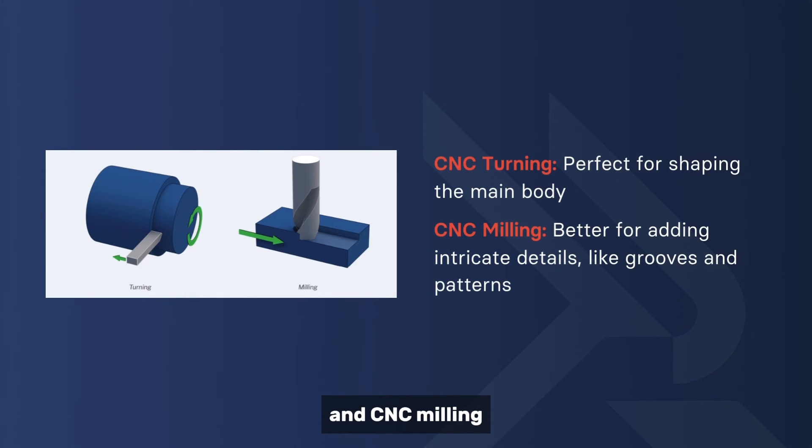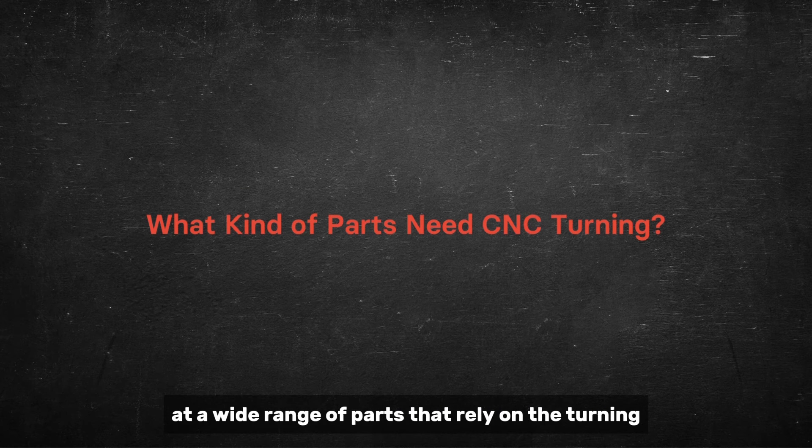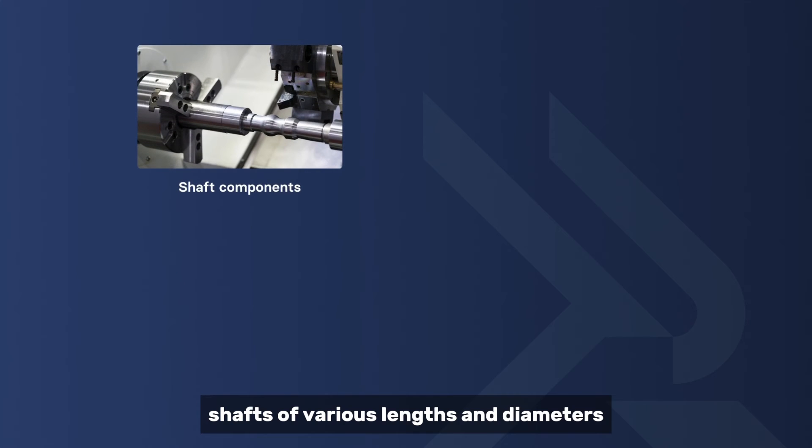We've understood the difference between CNC turning and CNC milling. Now let's take a look at a wide range of parts that rely on the turning process. Shaft components: Shafts of various lengths and diameters are commonly produced using CNC turning. These can be found in countless applications from automotive transmissions to industrial machinery.